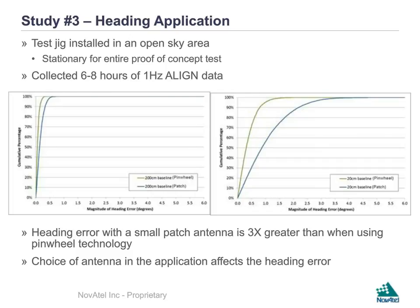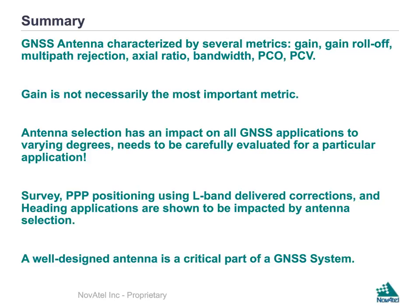In summary, GNSS antennas are characterized by several metrics: gain, gain roll-off, multipath rejection, axial ratio, supported bandwidths, PCO, and PCV. An important emphasis is that gain is not necessarily the most important metric. Antenna selection has an impact on all GNSS applications to varying degrees and needs to be carefully evaluated for a particular application. It's not simply a plug-and-play device that can be overlooked. We looked at a survey, PPP positioning using L-band-delivered corrections, and an align application, and showed these are all impacted by antenna selection. A well-designed antenna is a critical part of the GNSS system.